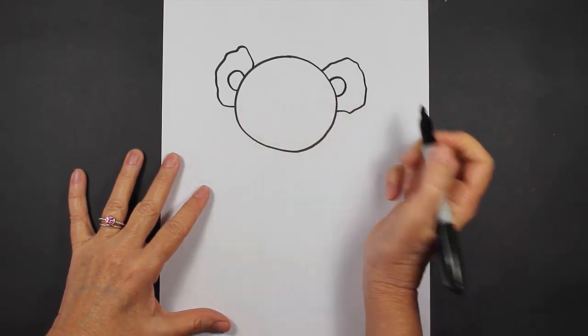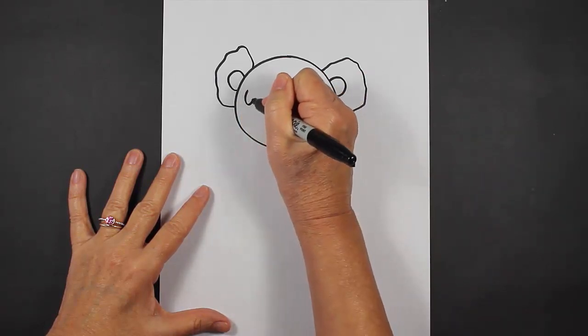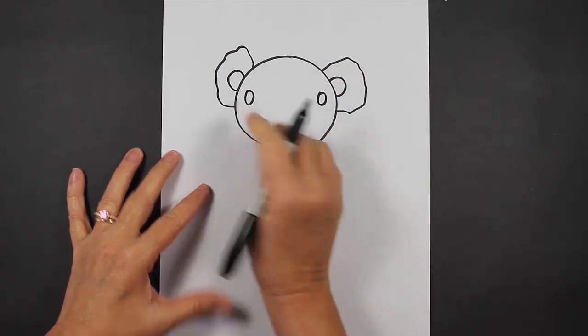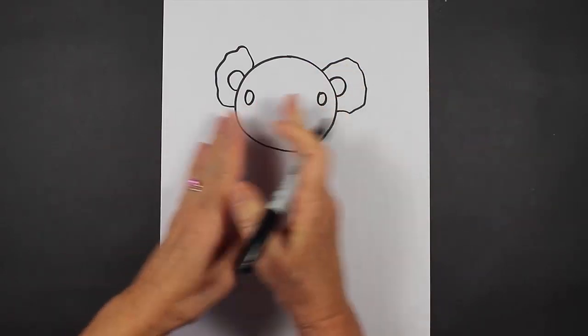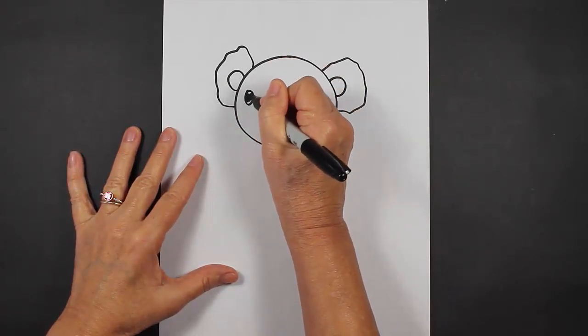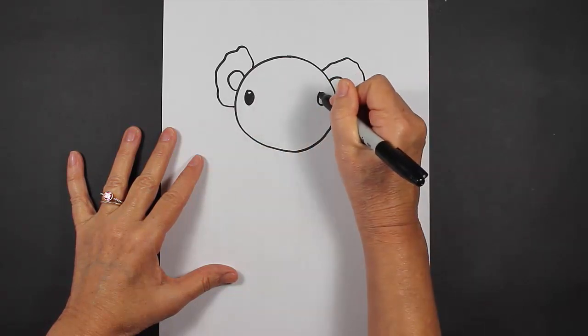Now I'm going to move to his eyes. I'm going to make oval eyes for my koala bear and I'm going to make them wide set, meaning that they're going to be far apart on the face. And at the top I'm going to put a small shine mark, a reflection mark.